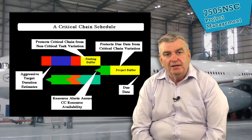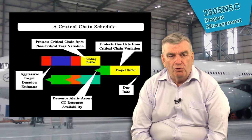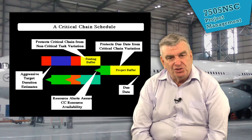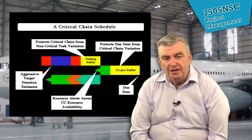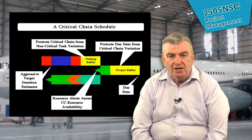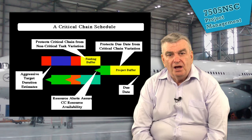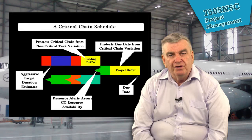Critical chain schedules are where we go for more aggressive target duration estimates. We've spoken about estimation and noted that people often underestimate the time required. But people can also deliberately overestimate to protect themselves against underestimation — it's a fact of human life. We'll talk about how we can use this to advantage, how we can protect the critical chain from non-critical task variation, protect due dates from critical chain variation, and also look at resource alerts. This is a very brief overview of a more complex subject.